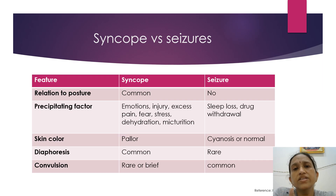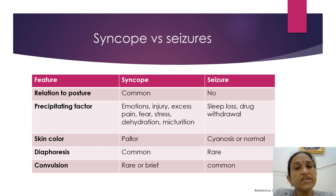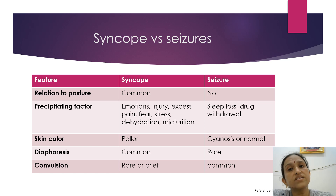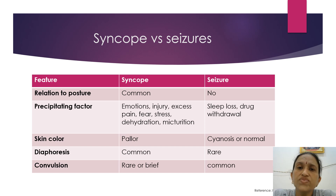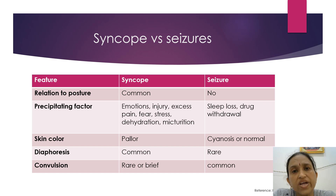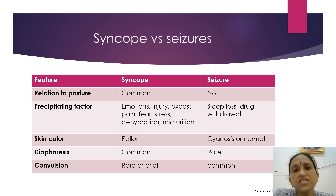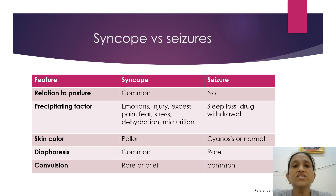When we take the history, one important thing is the eyewitness — comments by the eyewitness are very important in both these conditions because the one who has witnessed the scene can tell us the right things. In cases of syncope, the child was commonly found standing. There are most of the time precipitating events in the form of excessive pain, excessive fear, prolonged standing, or sometimes after micturition. The eyewitness can tell what the child was doing during the event.